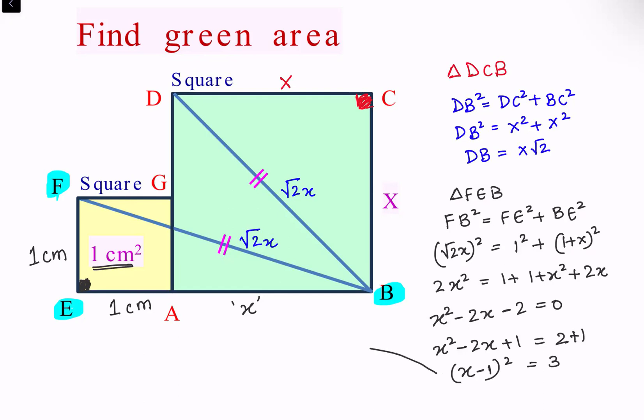Solving further, X minus 1 is plus or minus root 3. We'll avoid minus root 3 because that will give the side X as negative. So X minus 1 equals root 3, or X is root 3 plus 1.